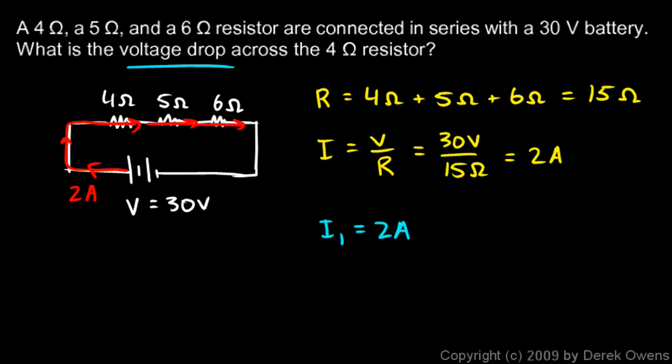I'm told to find the voltage drop across the 4 ohm resistor. That would be V1. So V1 is just I1 R1. Now we're applying Ohm's Law to one individual piece of the circuit. I1 is 2 amps, and R1 is 4 ohms. So that gives us a total of 8 volts. And that's our answer.